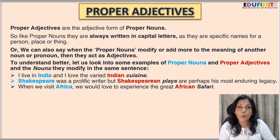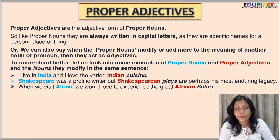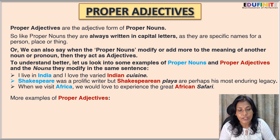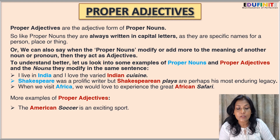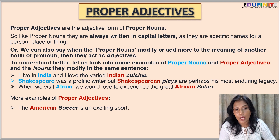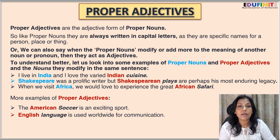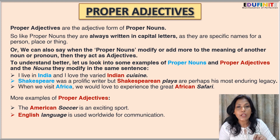'When we visit Africa, we would love to experience the great African safari.' Here 'Africa' is a proper noun and 'African' is a proper adjective modifying the noun 'safari.' Some more examples: 'The American soccer is an exciting sport' — 'American' is a proper adjective modifying the noun 'soccer.' 'English language is used worldwide for communication' — 'English' is a proper adjective modifying the noun 'language.' In every case, proper adjectives are always written in capital letters.